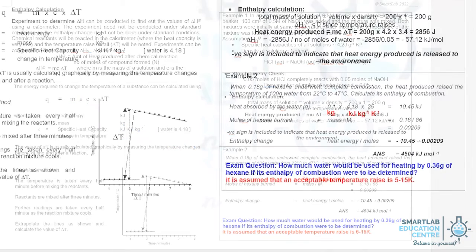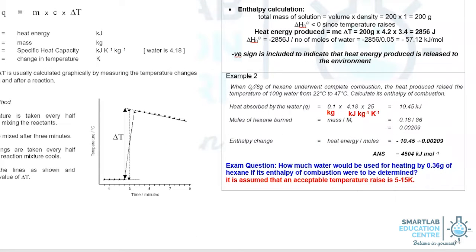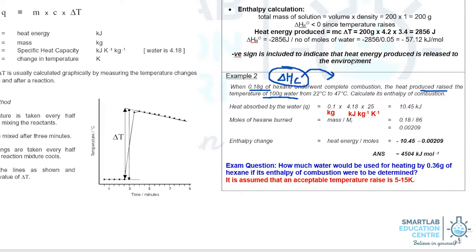Let's take a look at some calculations. In this first example, we're using 0.18 grams of hexane that underwent complete combustion. Heat energy produced raises the temperature of 100 grams of water. One needs to understand the chemical energy stored in hexane, which is represented by our enthalpy of combustion of hexane. That chemical energy is going to be released as heat energy to actually heat up the water.